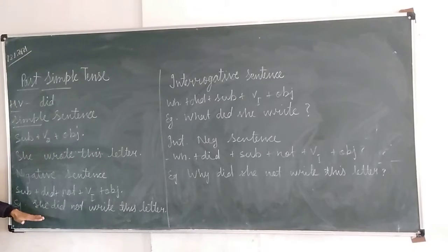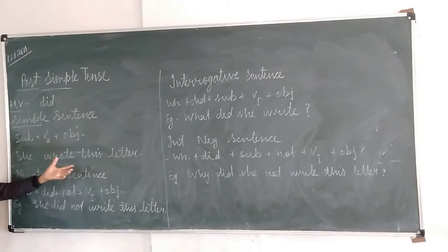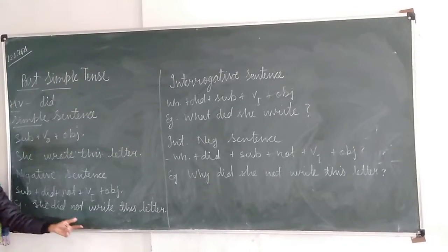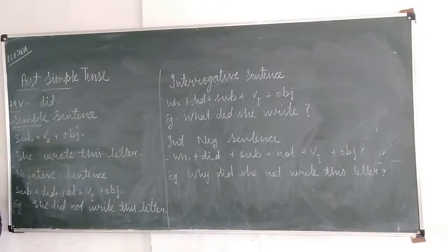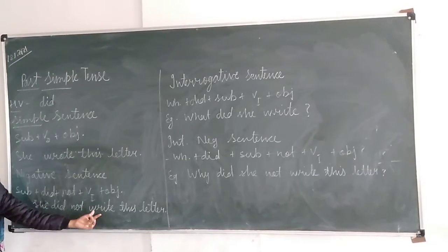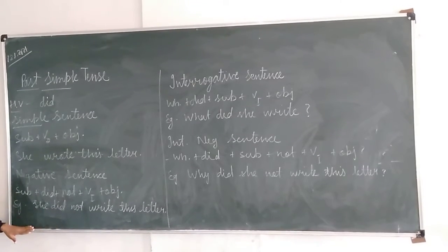So I have changed the same sentence to negative. Sentence structure is subject plus did not plus verb first form plus object. The simple sentence was: she wrote this letter. Now the negative of this is: she did not write this letter. I have used write here because we are already using did, which is the second form of do. So in a sentence, only one time we can use second form. So the main verb we will write in first form, not in second form. This is the example of a negative sentence of past simple tense.